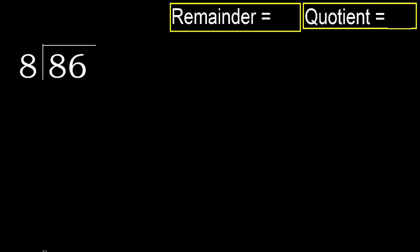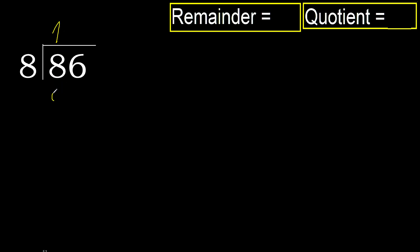86 divided by 8. 8 is not less, therefore start with 8. Here, 8 multiplied by which number is nearest to 8 but not greater? 8 multiplied by 2 is 16 — 16 is greater. Multiply by 1 is 8, which is not greater. Subtract: 8 minus 8 equals 0.